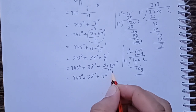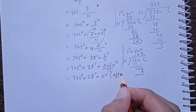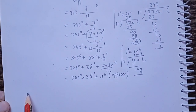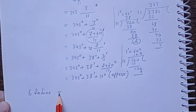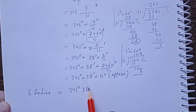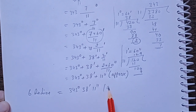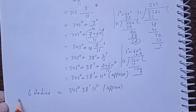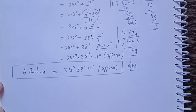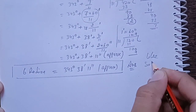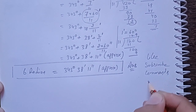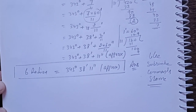120 divided by 11 is approximately 10.9, so we use the approximation value: 343 degrees plus 38 minutes plus 11 seconds (approximately). So our final answer is: 6 radians is equal to 343 degrees, 38 minutes, 11 seconds (approximately). This is your answer.